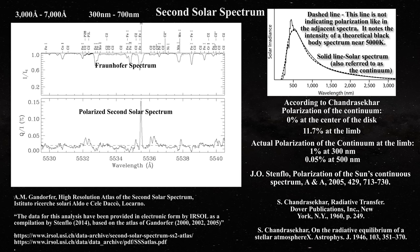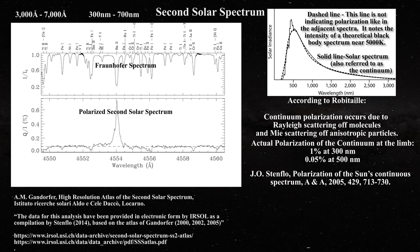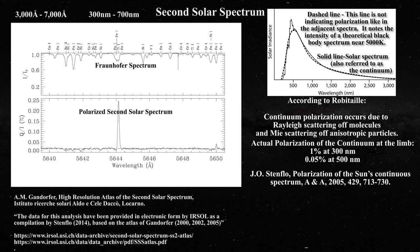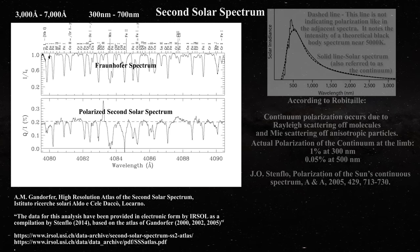The best answer, of course, is that none of these theoretical arguments are correct. The photosphere of the Sun is condensed matter, and the polarization we observe occurs due to Rayleigh scattering and Mie scattering produced by molecules and anisotropic particles which are found above it.